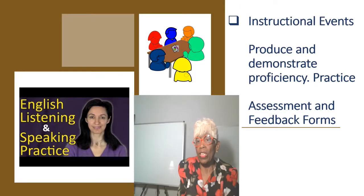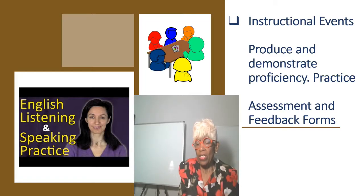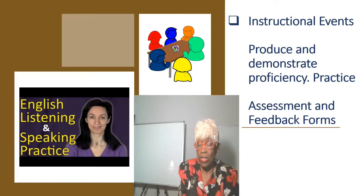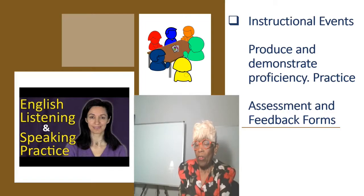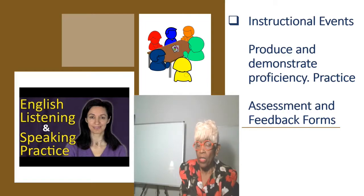The instructional events used for this micro lesson are to produce and demonstrate proficiency by practicing the correct pronunciation of the R and L words from a word list that I have provided to the learners. There will also be an assessment and feedback form. The learners will use the assessment form to check the words that they hear from other learners as they read their story, and they will indicate on the form how each student pronounced or mispronounced the words from the word list in their story.